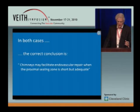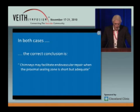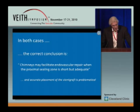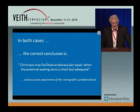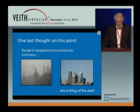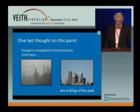In both cases, the correct conclusion is this: chimneys may facilitate endovascular repair when the proximal sealing zone is short but adequate, and when accurate placement of the stent graft is problematical, which seems to be often the case in Malmo. One last thought on this point — except in exceptional circumstances, chimneys have become a thing of the past.